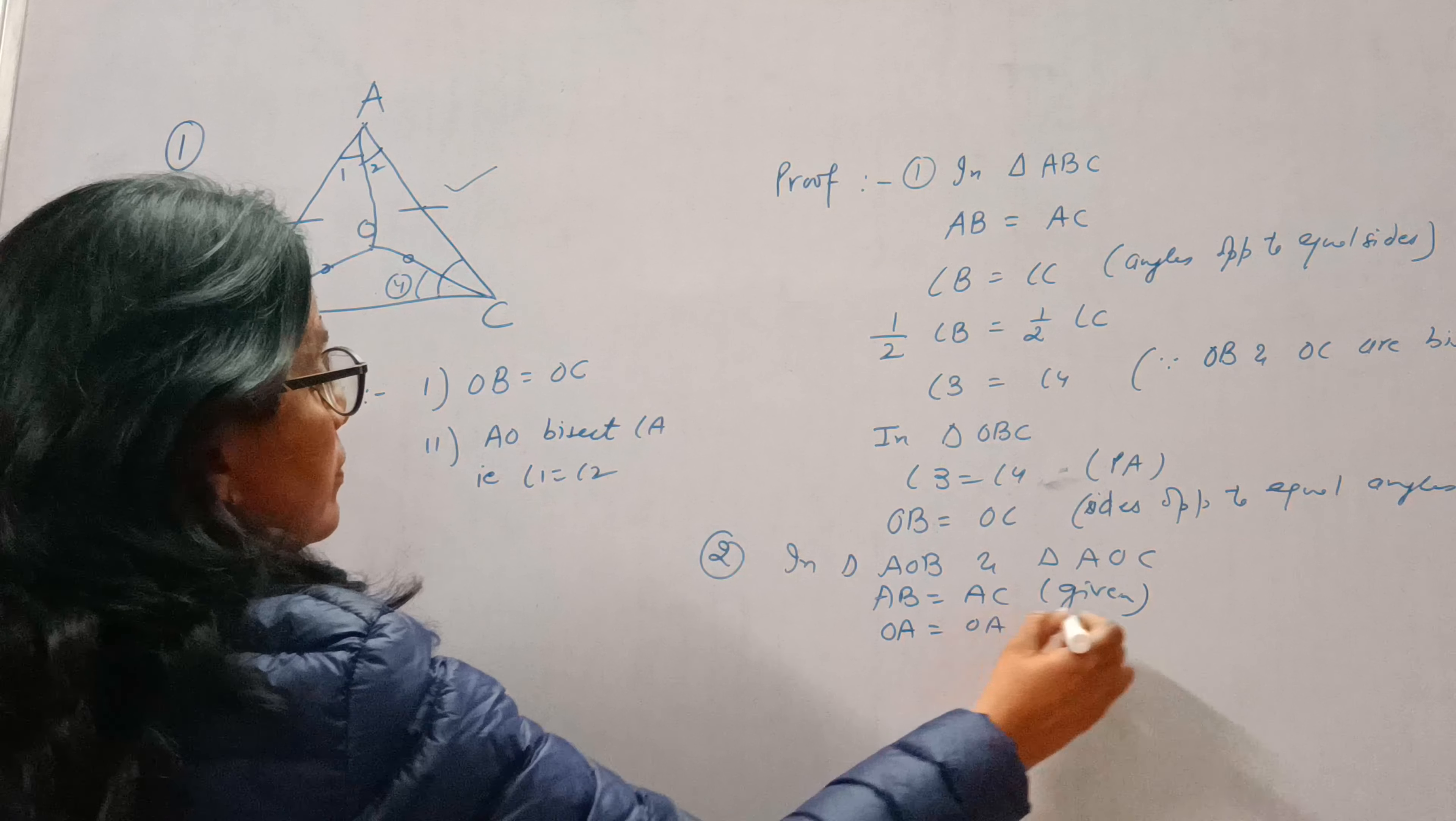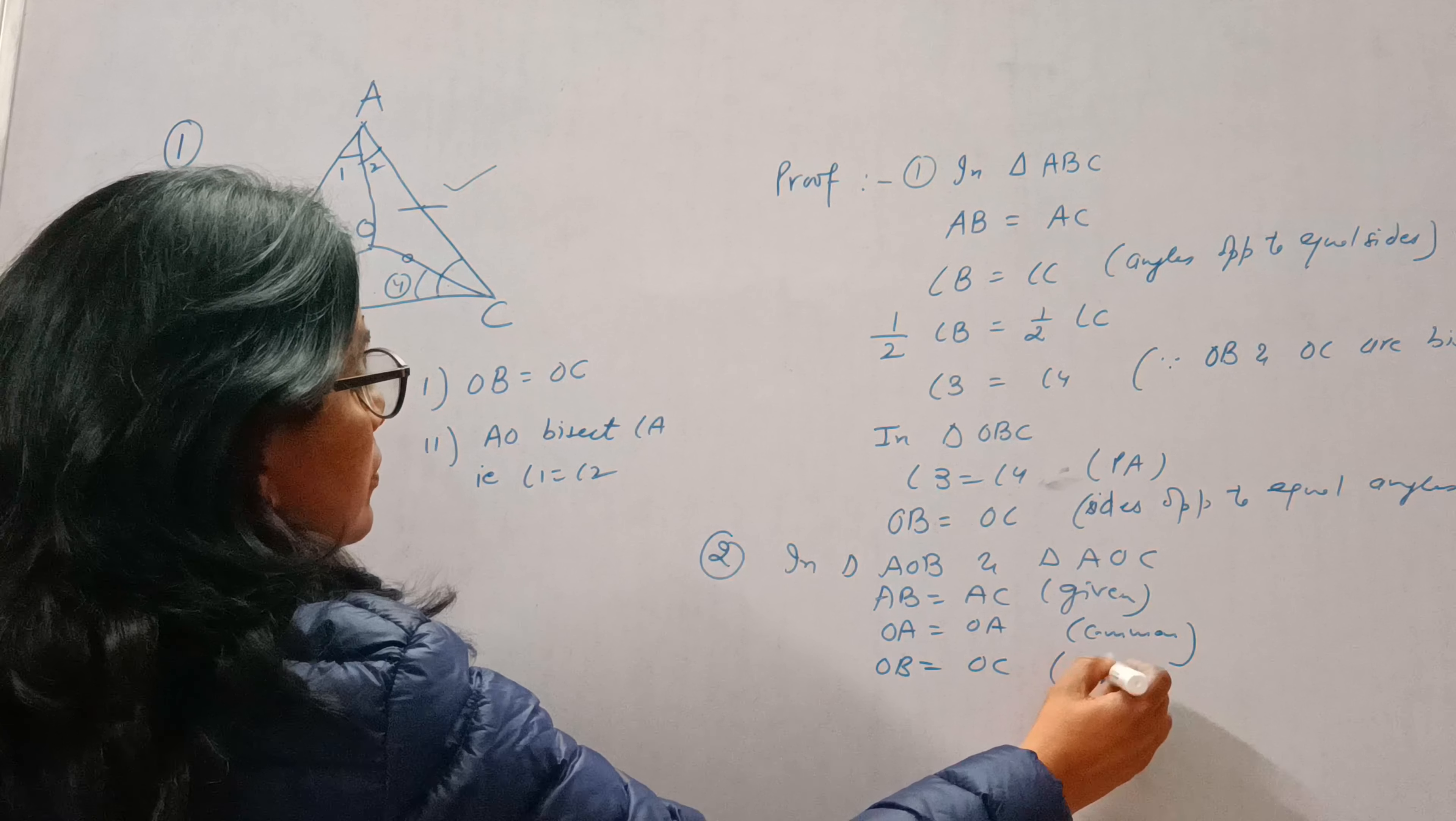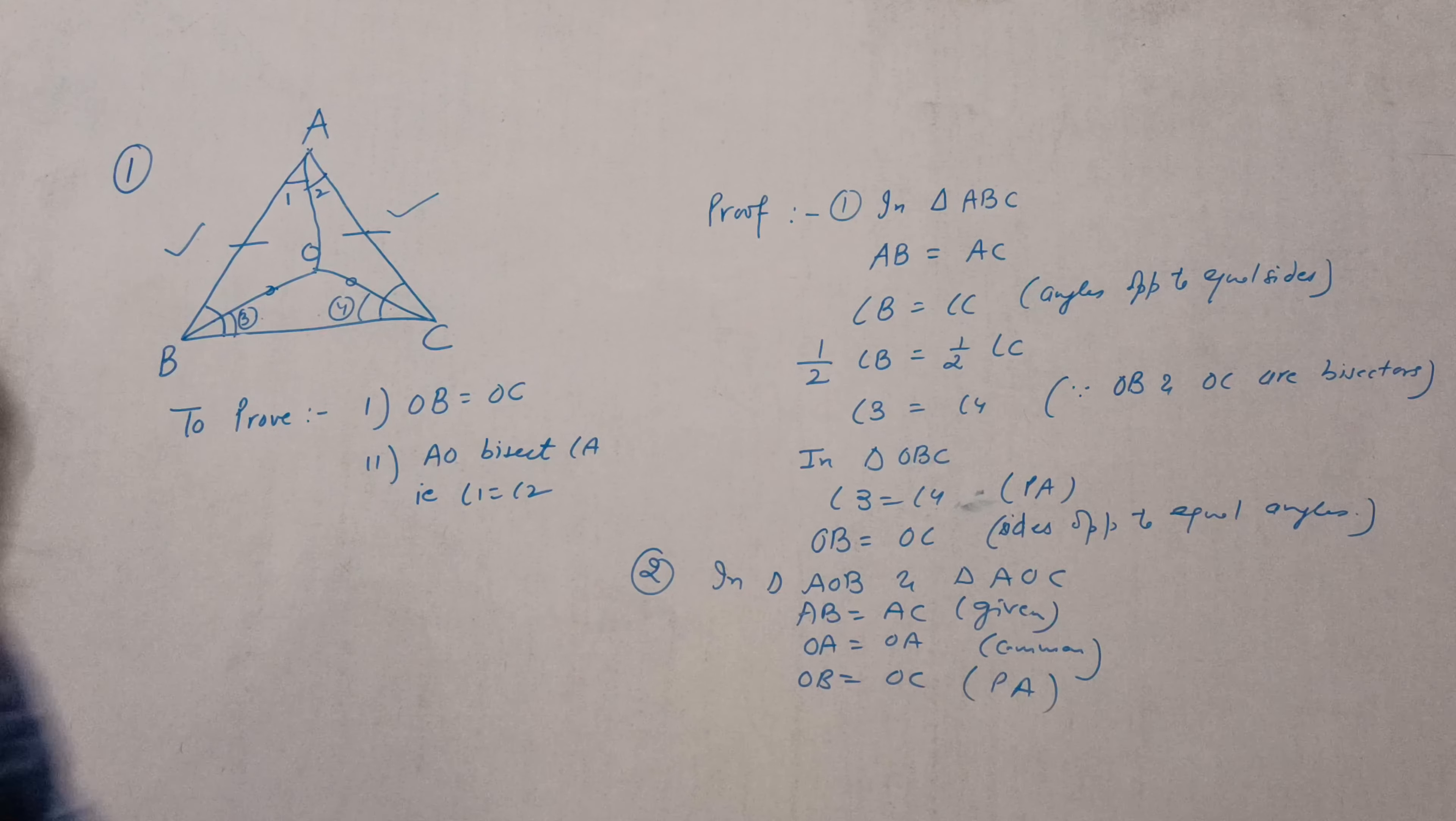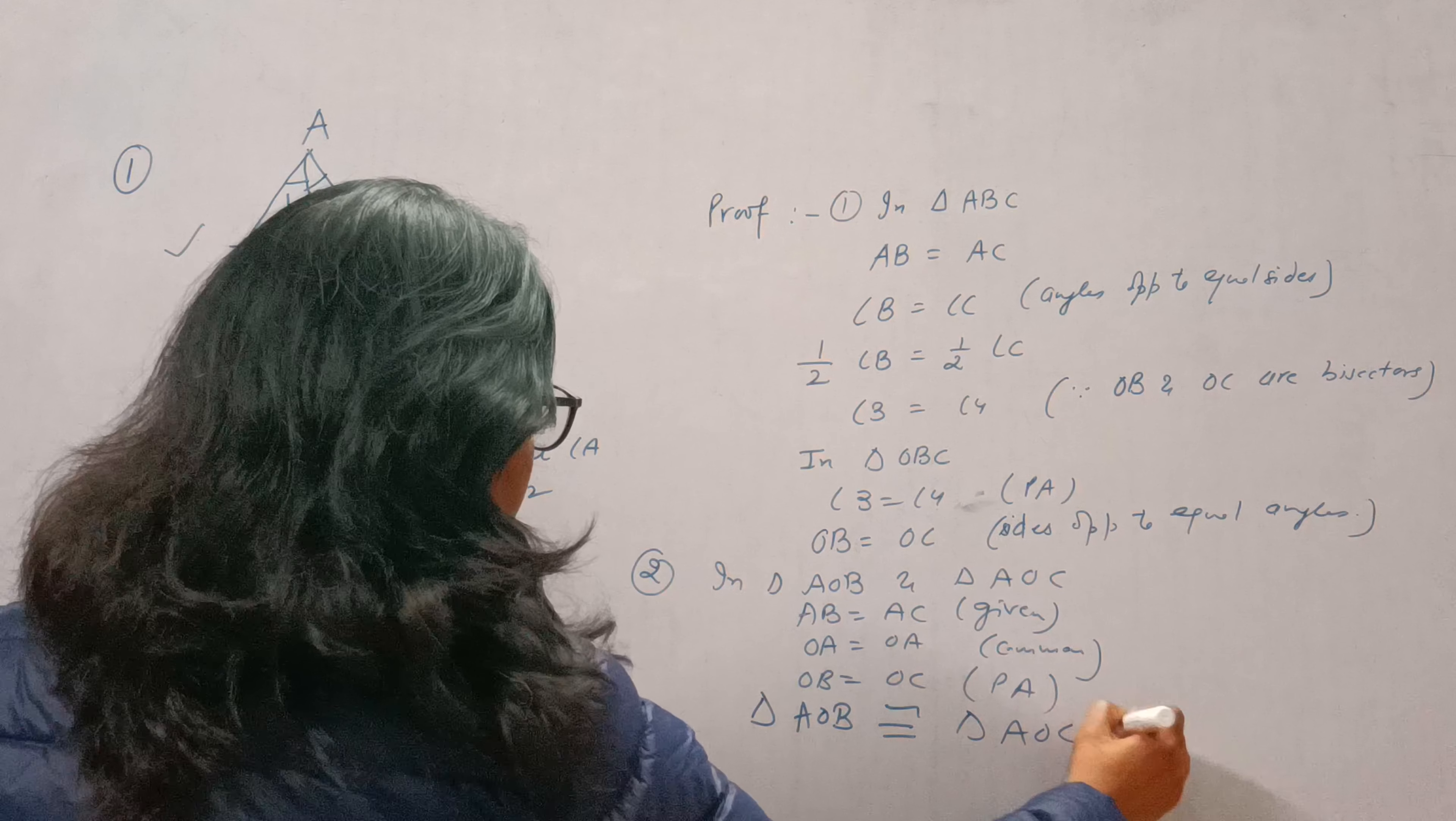OA is common. And OB is equal to OC, proved above. Okay, so these two triangles are congruent by SSS, side-side-side. So we can write triangle AOB congruent to triangle AOC by SSS.